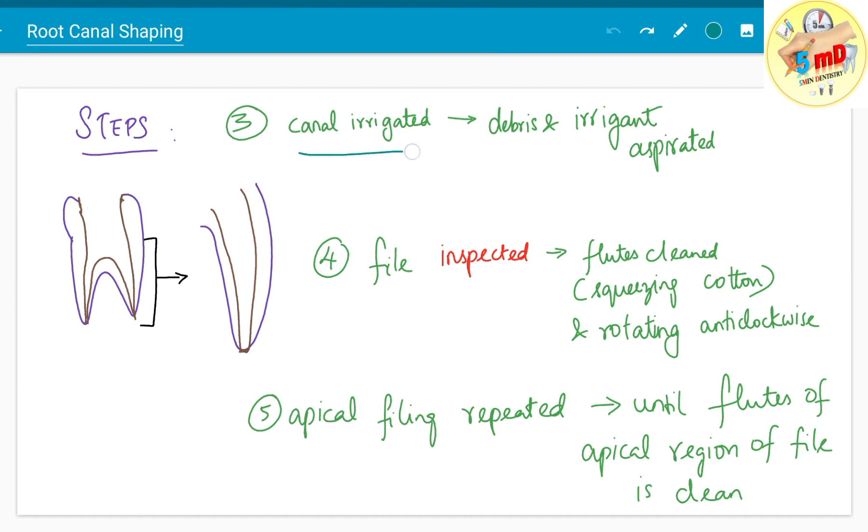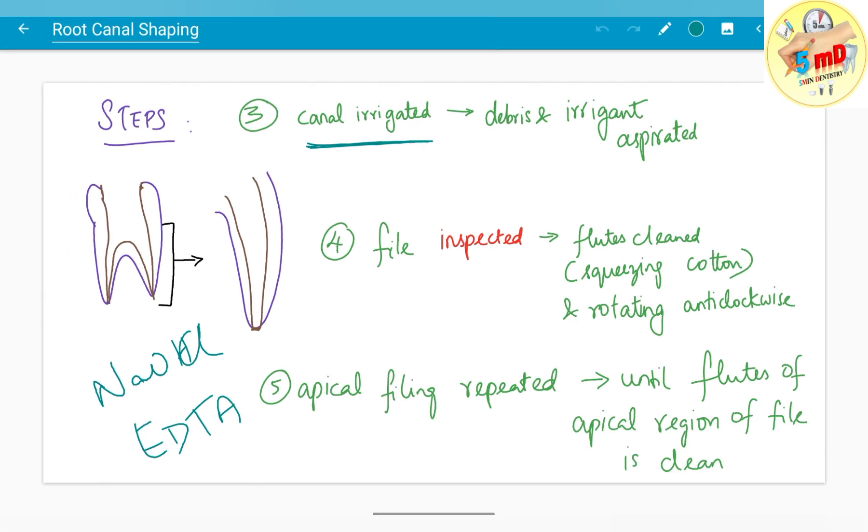The canal is irrigated with an ideal irrigant, usually sodium hypochlorite or EDTA. The debris and irrigant are aspirated and removed. The file is inspected and the flutes are cleaned with squeezing cotton. Since the file rotates clockwise into the canal, squeezing cotton and rotating anti-clockwise removes the debris from the flutes.